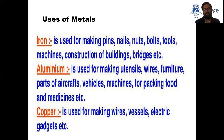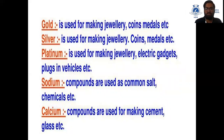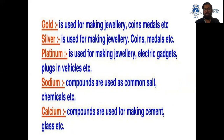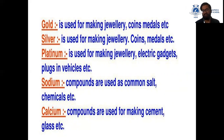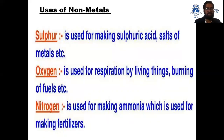Copper is used for making wires because it is a good conductor of electricity, and is also used to make vessels and electrical gadgets. Gold is used for making jewelry and coins. Silver is also used for making jewelry and coins. Platinum is used for making jewelry, electrical gadgets, and plugs in vehicles. Sodium compounds like sodium chloride (NaCl) are used as common salt, and sodium bicarbonate (NaHCO₃) is used as baking soda. Calcium compounds are used for making cement and glass.